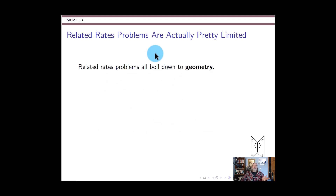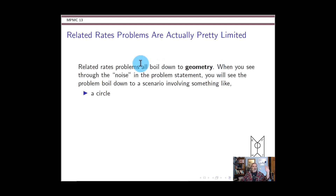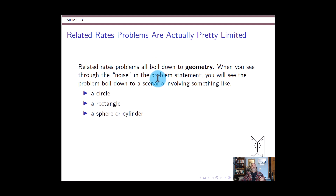Related rates problems are word problems by their definition. The thing about them is they're all going to boil down to a geometry. The verbal description of a scenario will have a bunch of noise in it, but if you can see through that noise, you're going to recognize that no matter how descriptive the scenario is, it's going to boil down to something involving a circle, a rectangle, a sphere, a cylinder, maybe a triangle, or the distance between a couple of things — which effectively is a triangle. Everything boils down to a geometry.